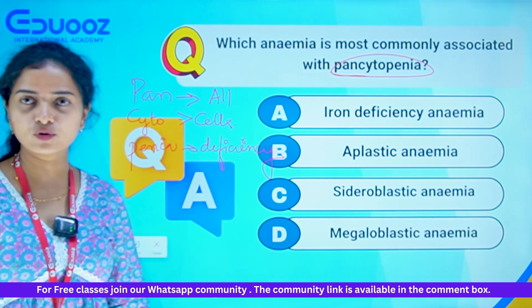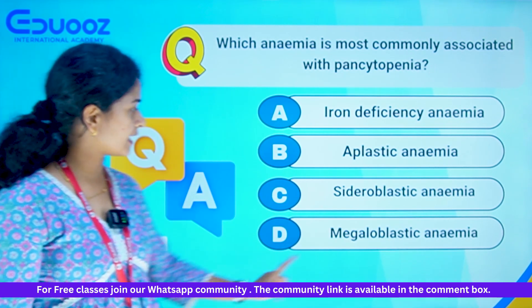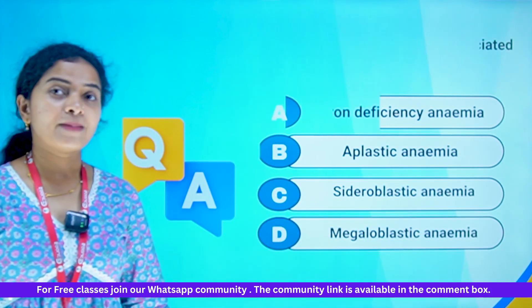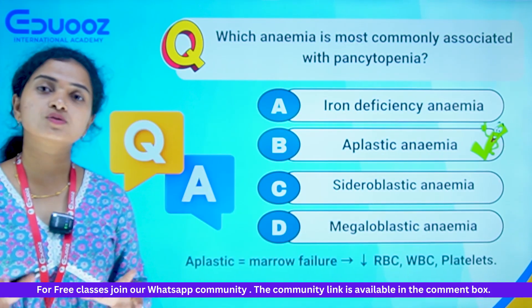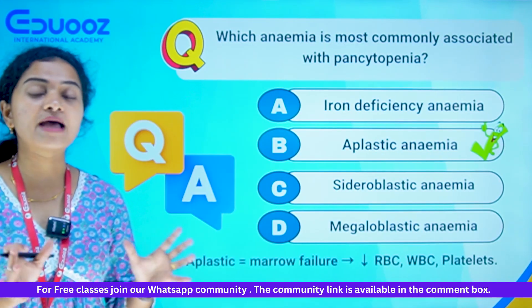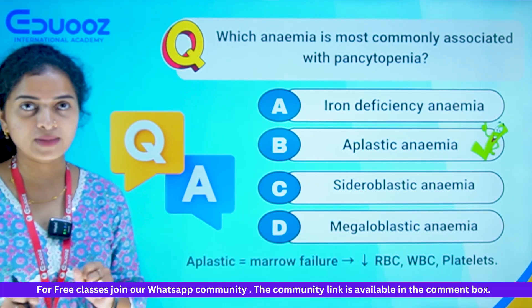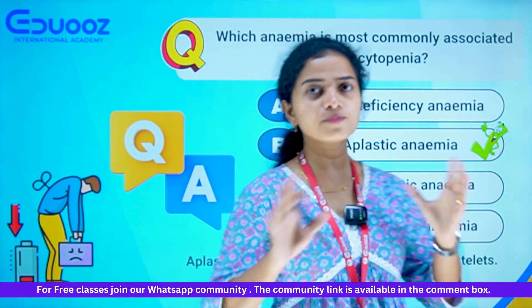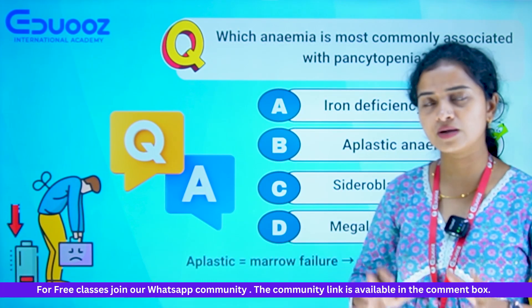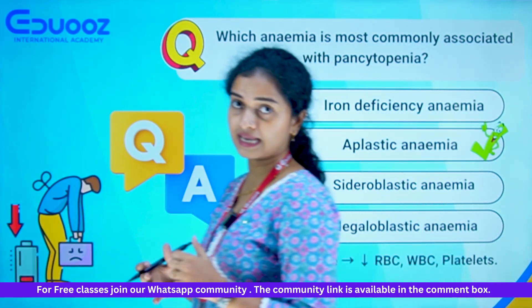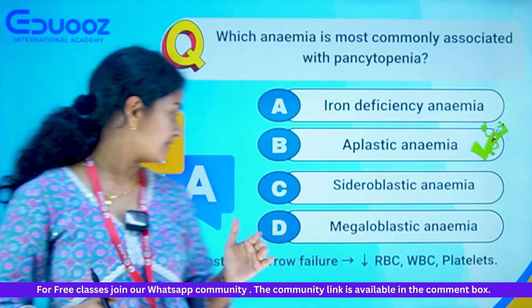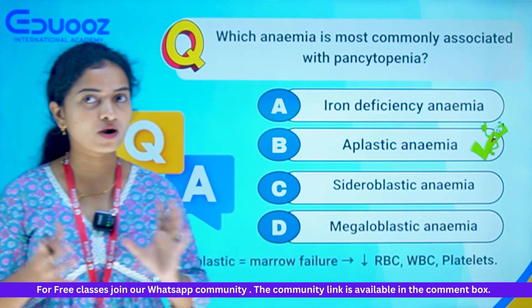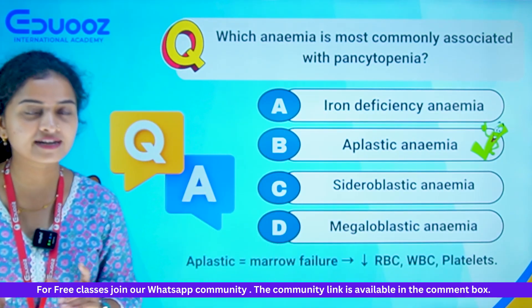So what is the answer? Pancytopenia is associated with Aplastic Anemia. Aplastic means hollow — it refers to bone marrow failure.